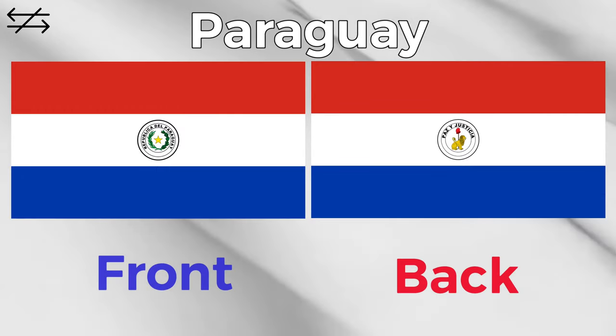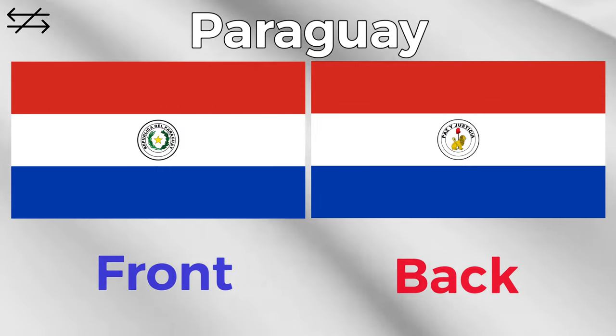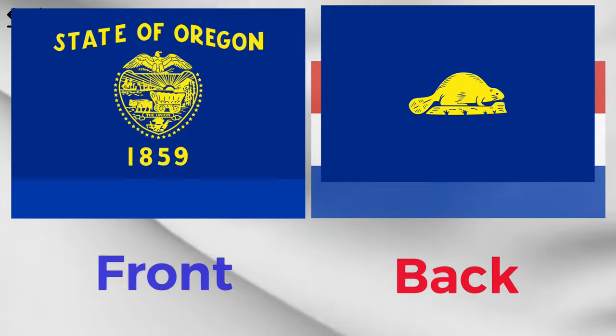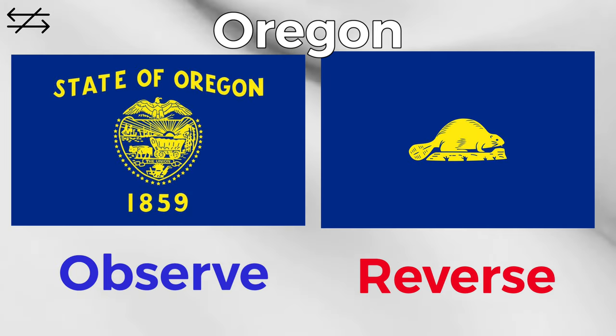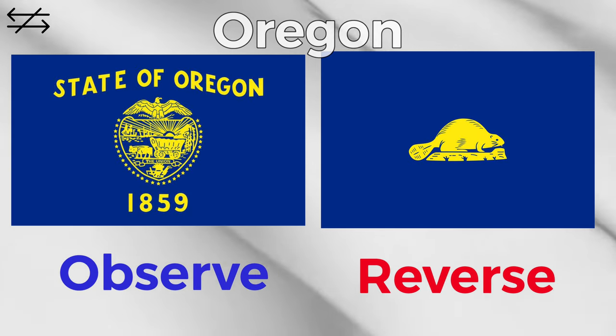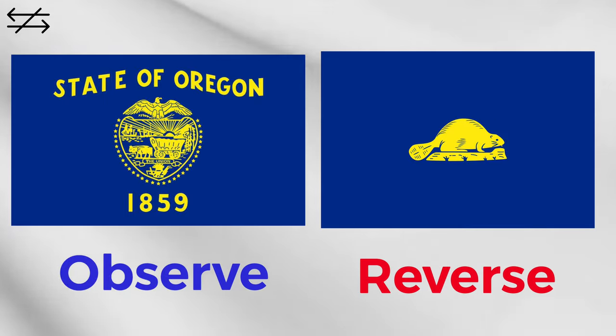This states that the reverse side of the flag has a different design to that on the front — for example, the flag of Paraguay. On the front they have the coat of arms of Paraguay; the reverse has the seal of the treasury. Or the US state flag of Oregon, with the usual blue bedsheet style, with the state seal on the observed side and a beaver on the reverse side.